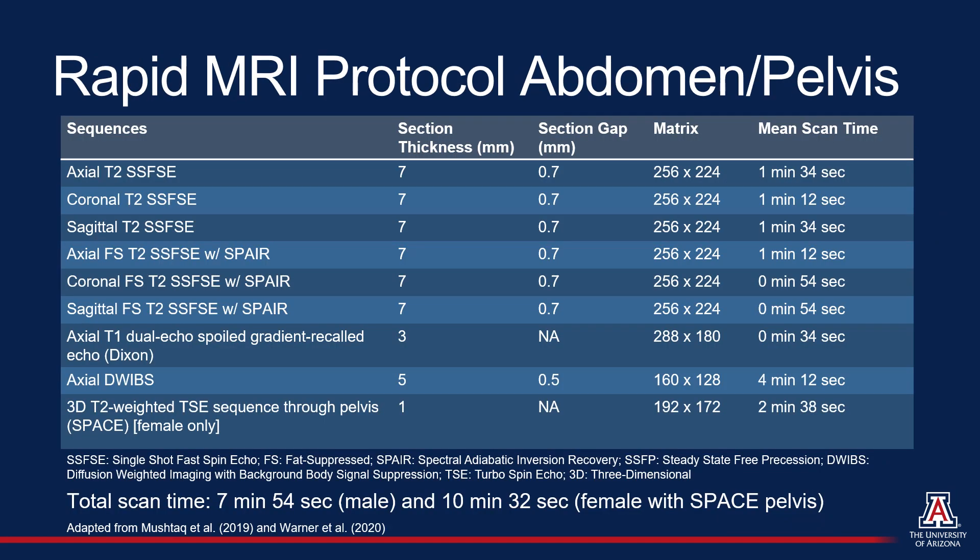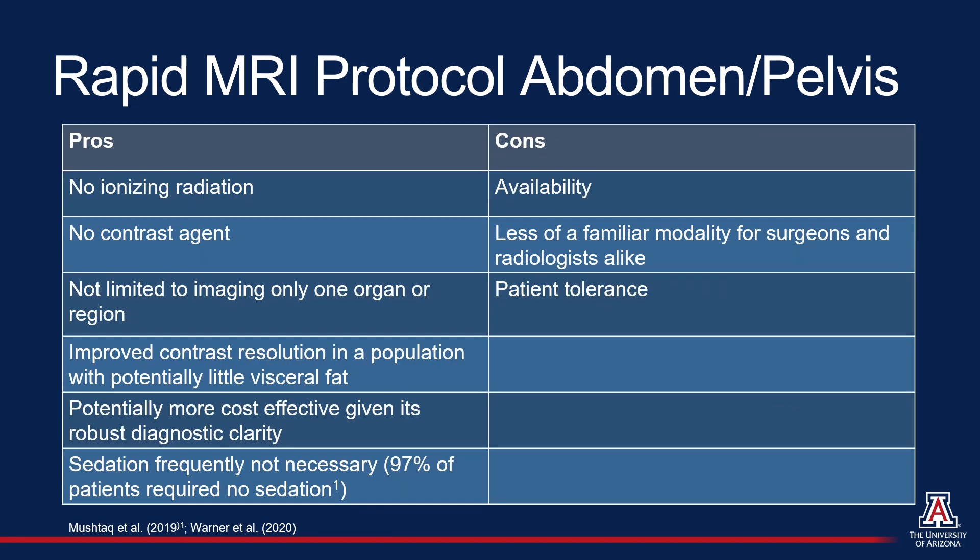DWI is a key sequence in our rapid MRI abdomen-pelvis protocol, which is a non-contrast enhanced MRI that has a total scan time of 7 minutes and 54 seconds for males, and 10 minutes and 32 seconds for females, with the addition of the SPACE sequence through the pelvis. Our rapid MRI examination provides many benefits, and some research suggests that it may be more cost-effective than other imaging modalities when evaluating acute abdominal pain, due to its wide field of view and diagnostic clarity. At our institution, in presumed cases of acute appendicitis, rapid MRI led to an alternative diagnosis in 37% of patients.